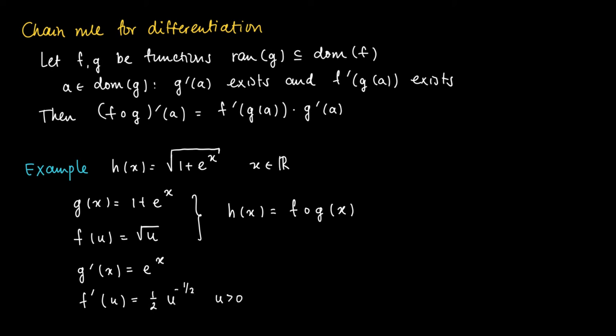The chain rule for differentiation now says that for any value a, the composite function h of x is differentiable. And for instance if we try to find the derivative in 1, then the only thing we need to do to find it is calculating the derivative of f evaluated in g1 times the derivative of g in 1. And this equals a half times 1 plus e to the power minus a half. The idea of 1 equals 1 plus e, so we get a half times 1 plus e to the power minus a half times e to the power 1.